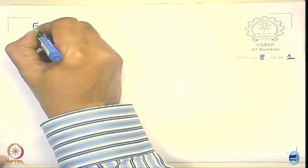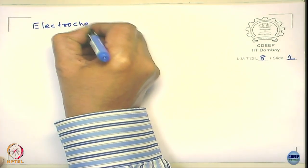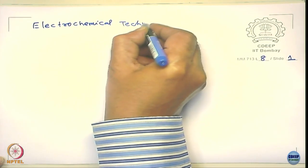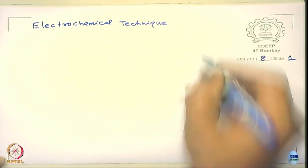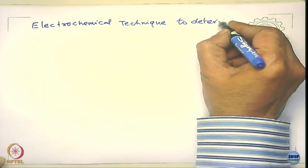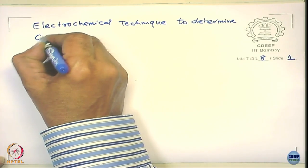How do you do it? It is not very straightforward using electrochemical technique. What we look at here is the electrochemical technique to determine corrosion kinetic data.